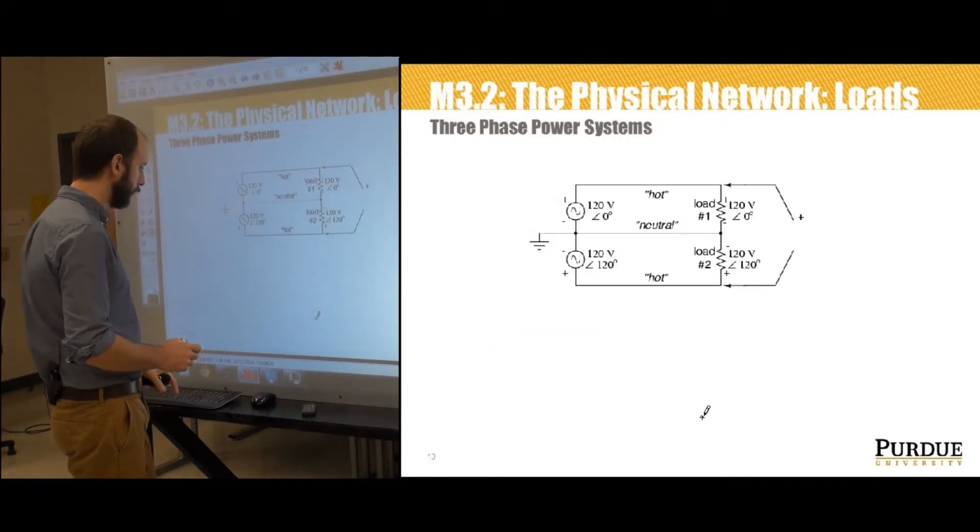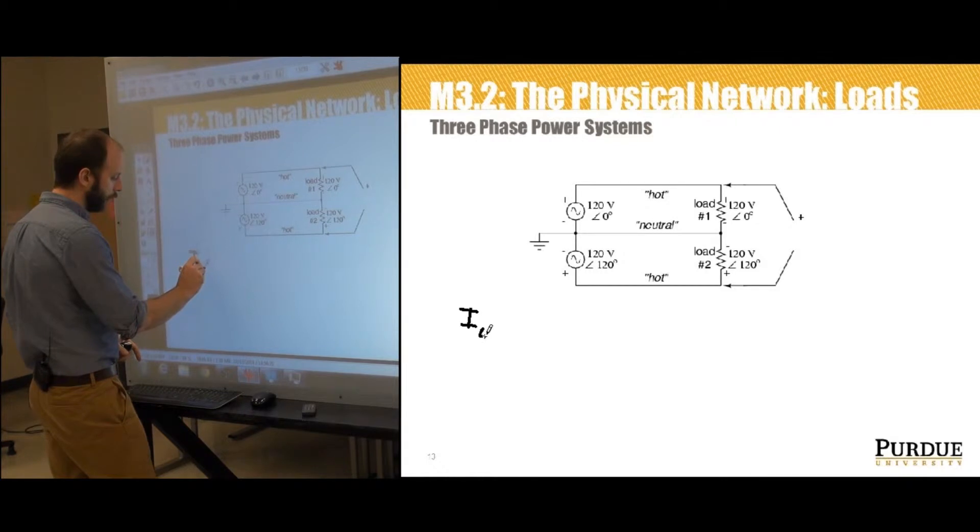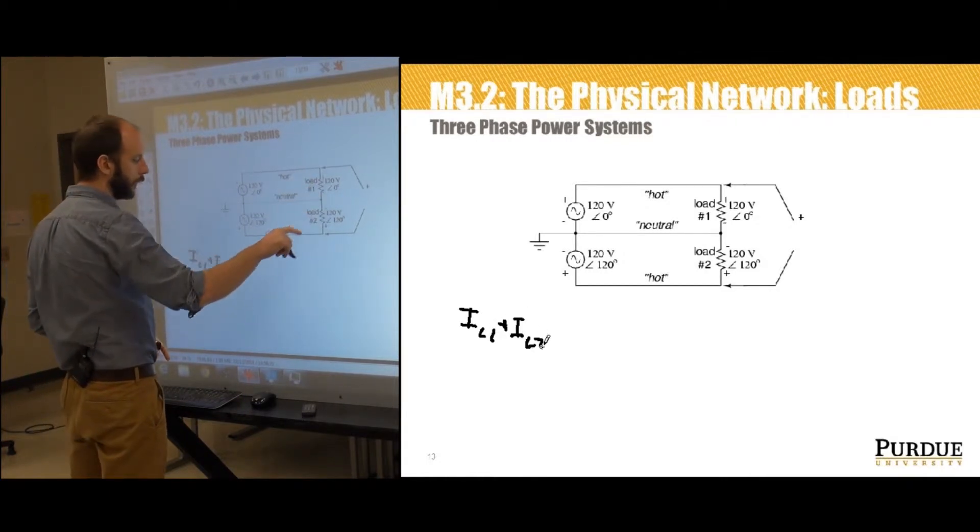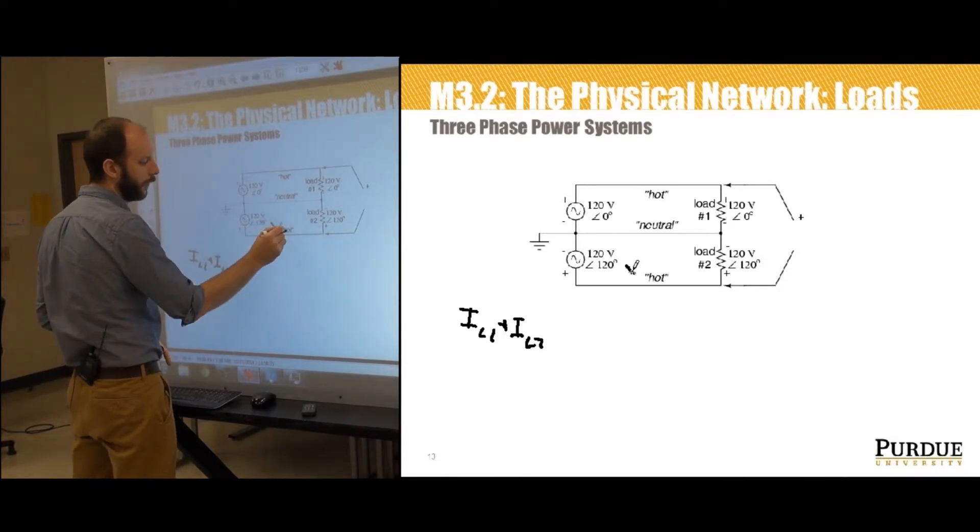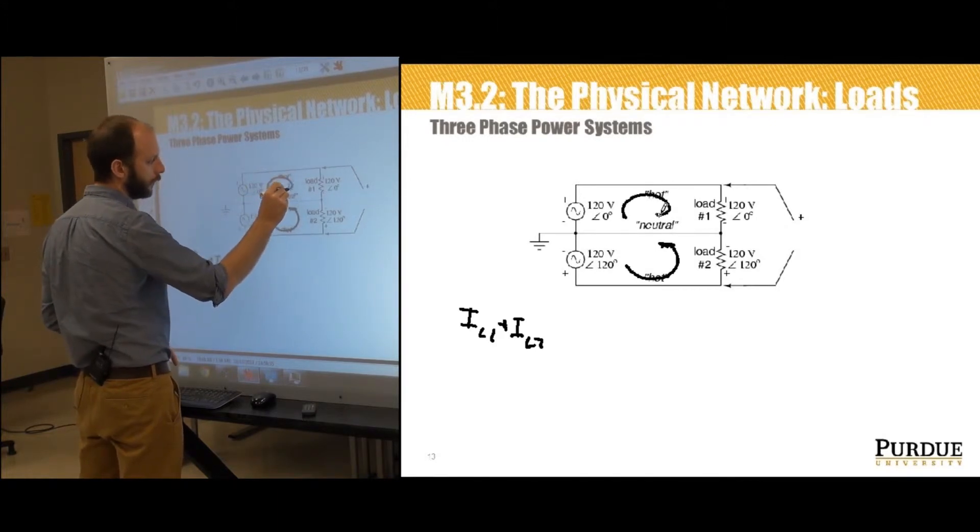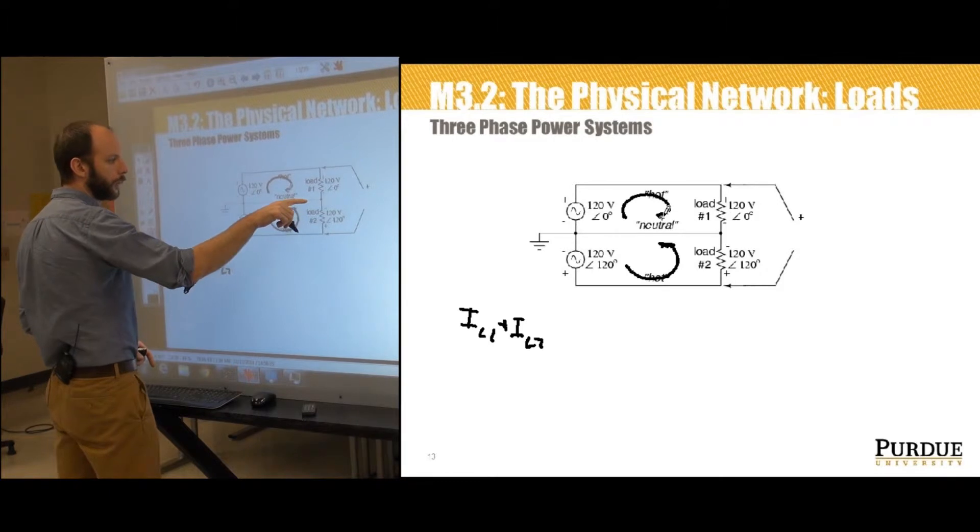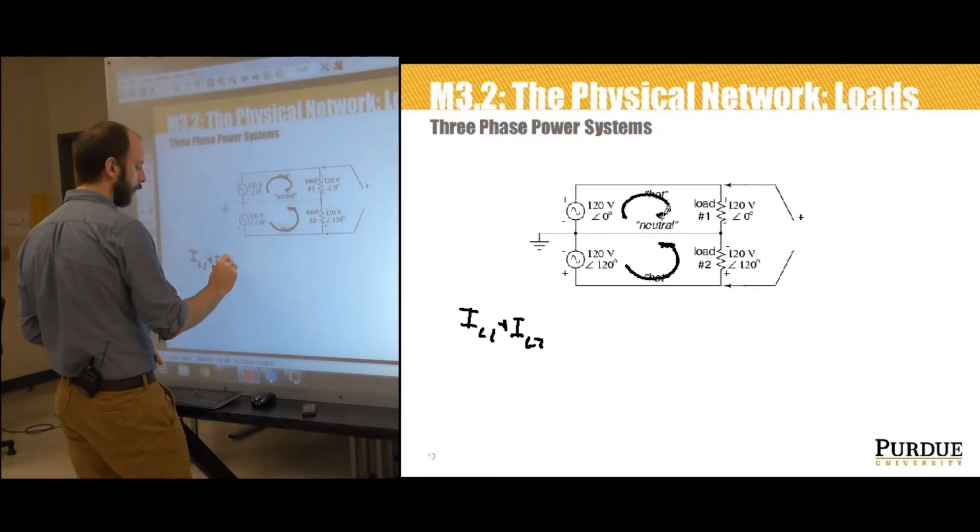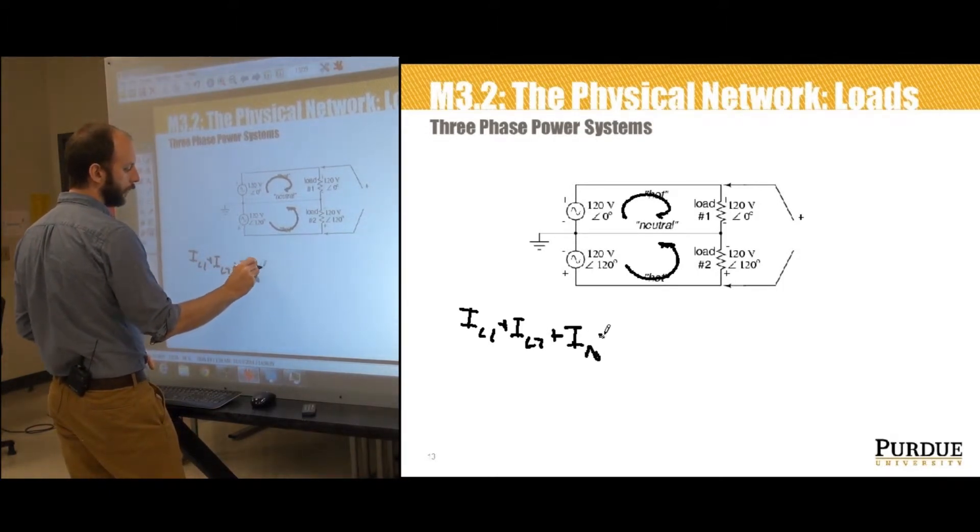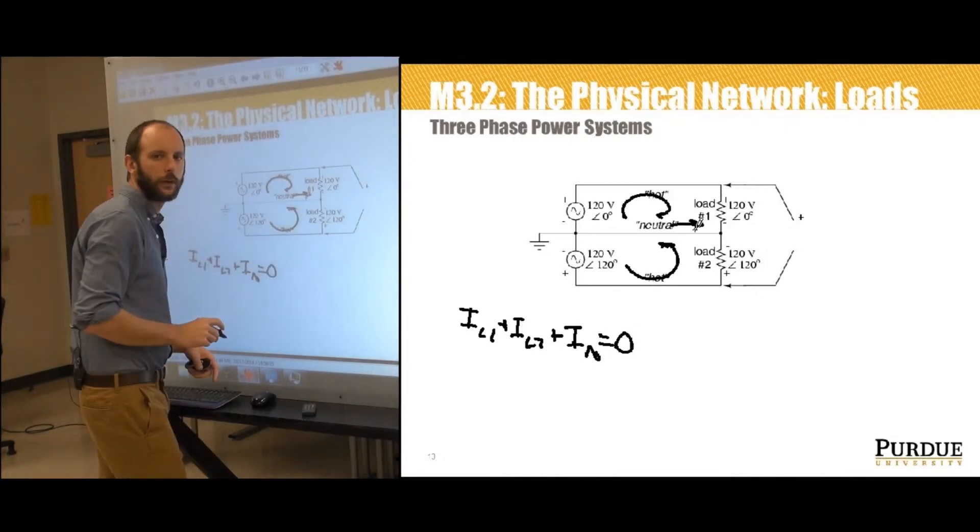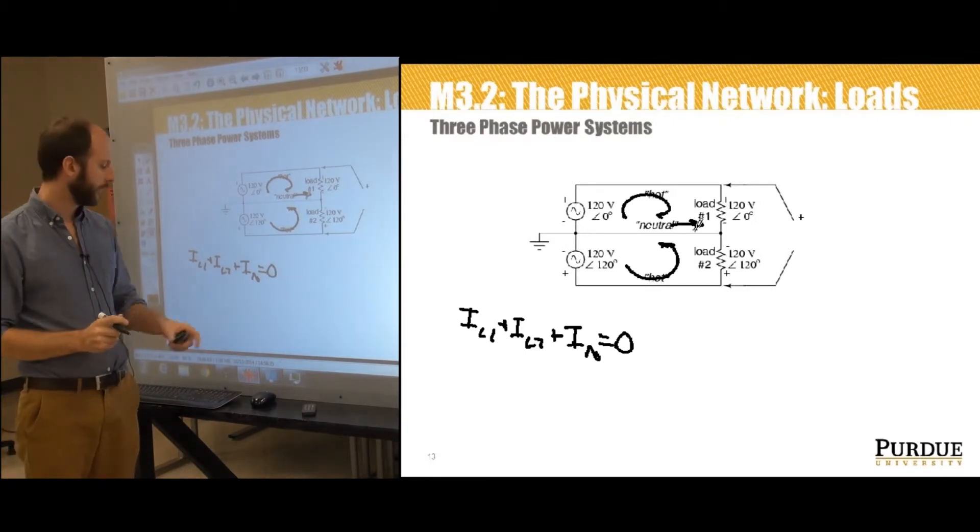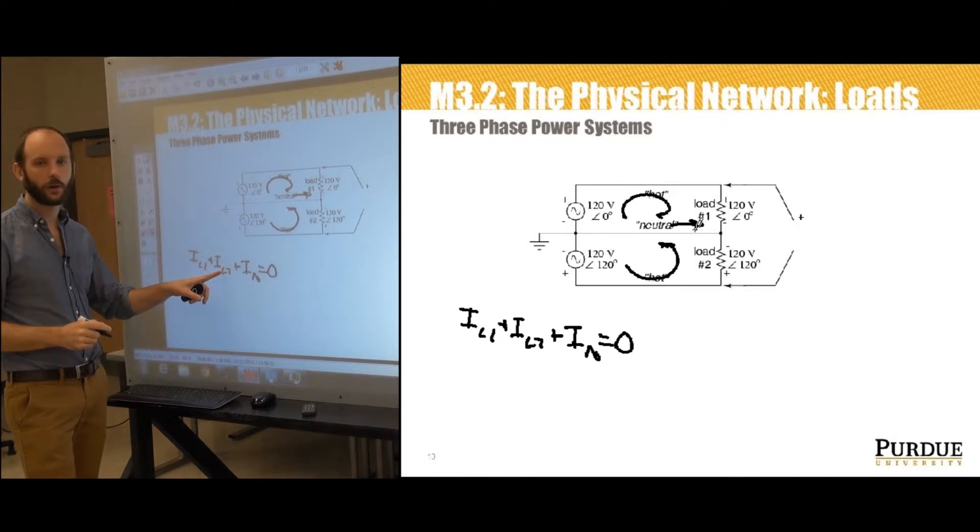So I'm just going to clear my slide real fast. I load one plus I load two, that's the current flowing in this direction. Notice the positive sign points this direction. So this loop flow actually flows this way. This loop flow flows this way. So those are both entering that node. If we were to take the neutral as entering the node plus I neutral, those have to sum to zero. That means neutral is flowing in that direction from that. So that's 83.33 amps at an angle zero. That's 83.33 amps at 120.